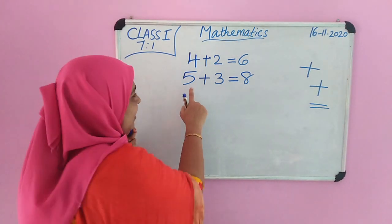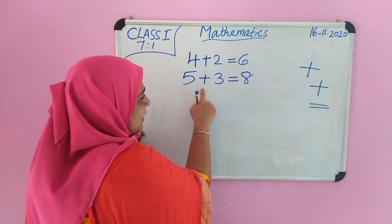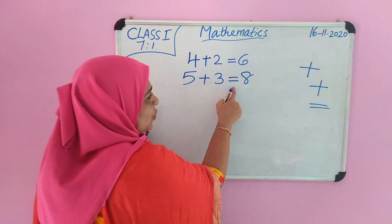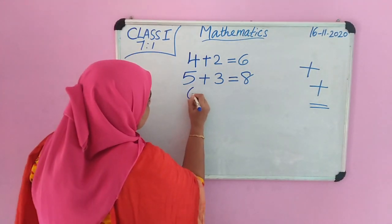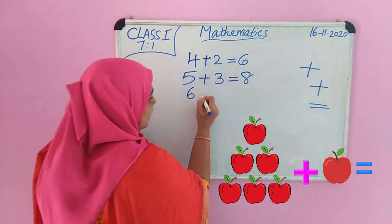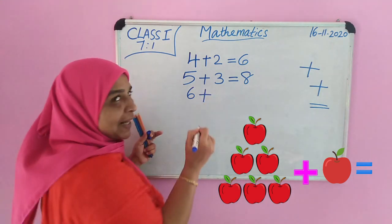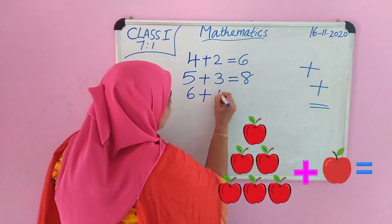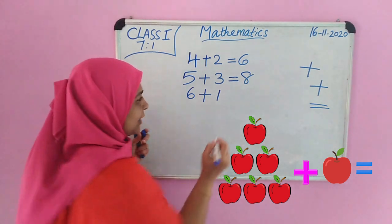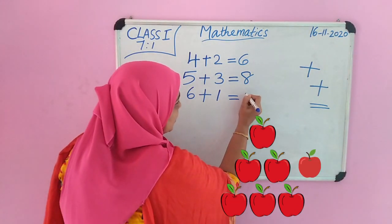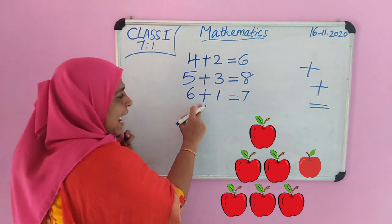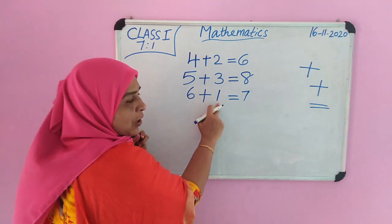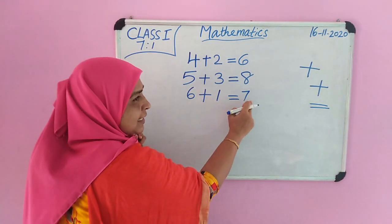We read it 5 plus 3 equal to 8. Then 6. 6. Symbol plus. The number 1 equal to 7. 6 and one more make 7.